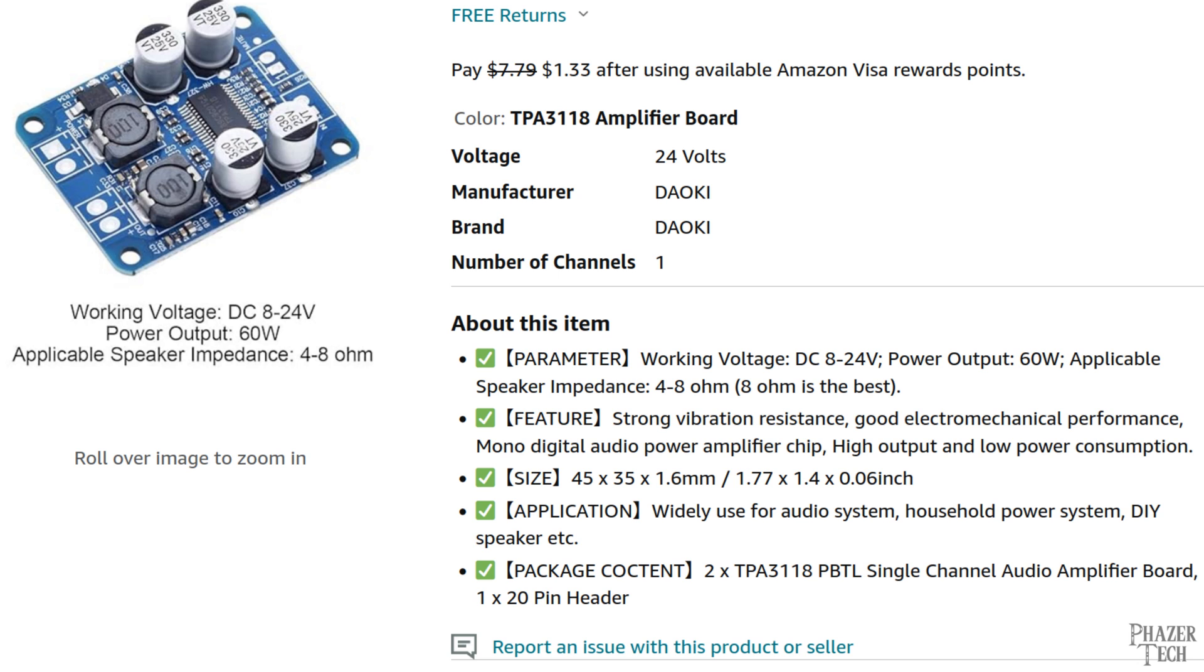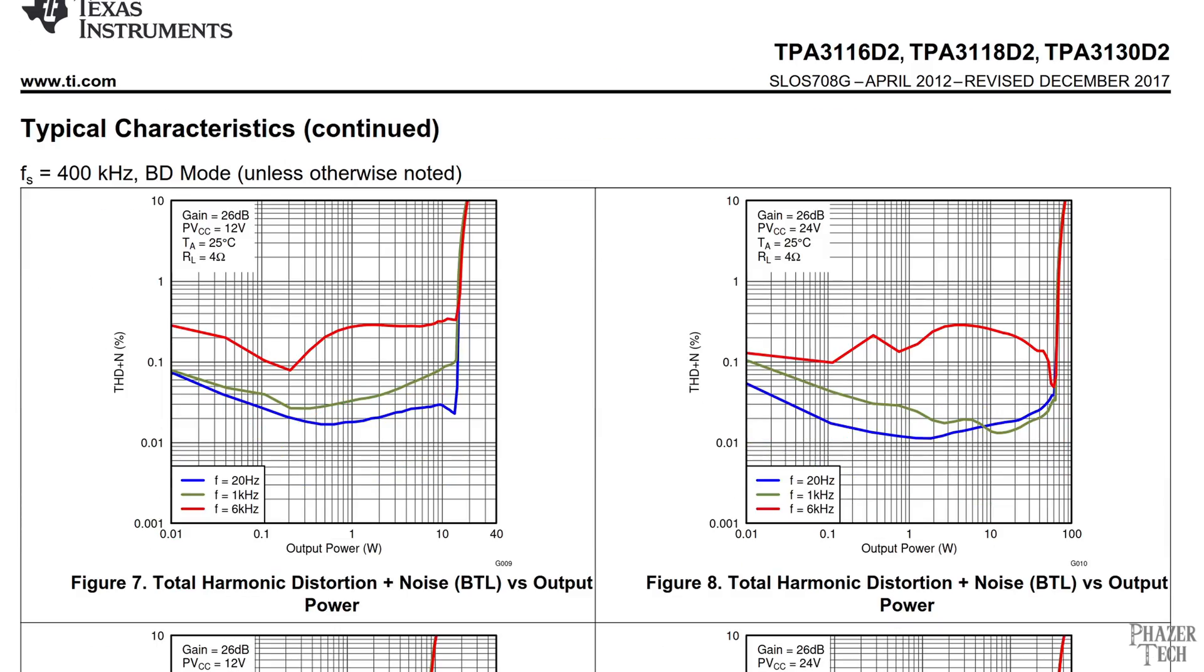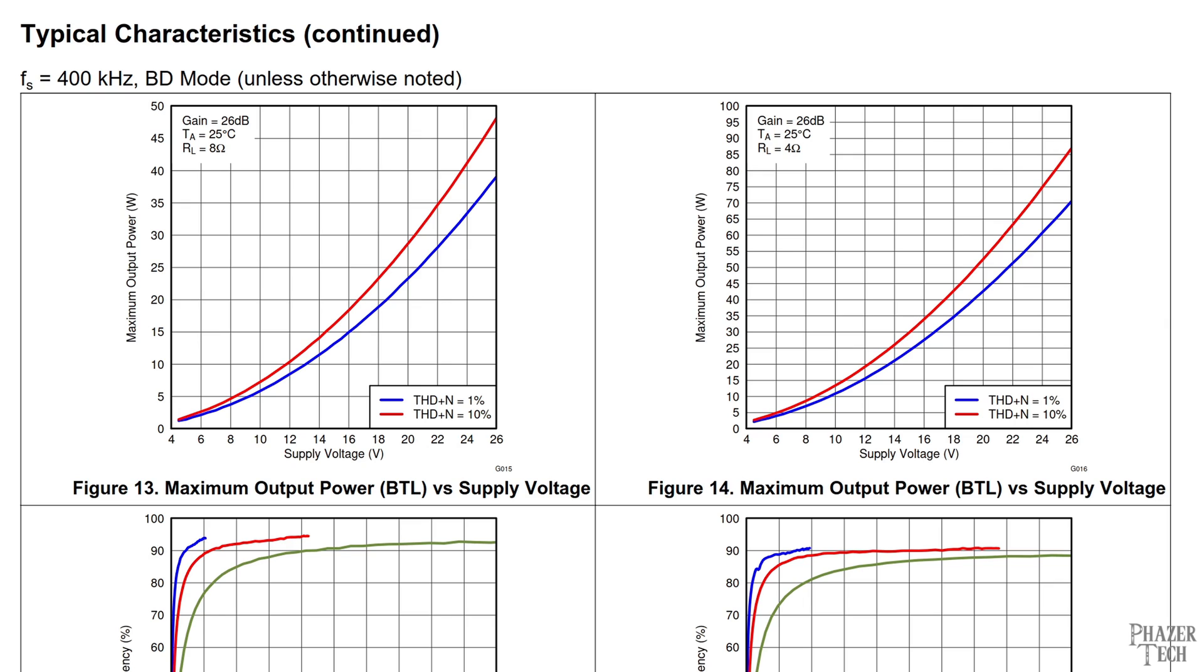But let's now take a look at the datasheet for the TPA3118 to gain more insight into it. Let's scroll down to the graphs which show the supply voltage versus maximum output power curve, since the output power depends on the supply voltage. The graph on the left shows the curve using an 8 ohm speaker while the graph on the right is for a 4 ohm speaker. You can see with a 24 volt supply and a 4 ohm speaker the amp can deliver around 60 watts with 1% total harmonic distortion, which is the blue line. And with an 8 ohm speaker you can get up to around 35 watts with a 24 volt supply, which is still extremely loud.